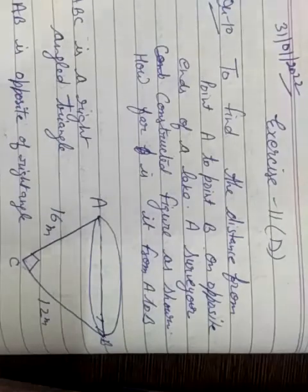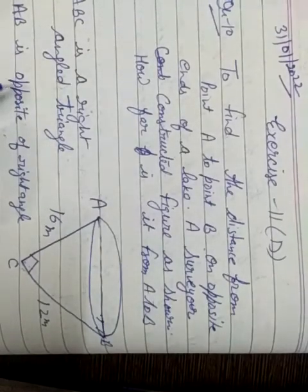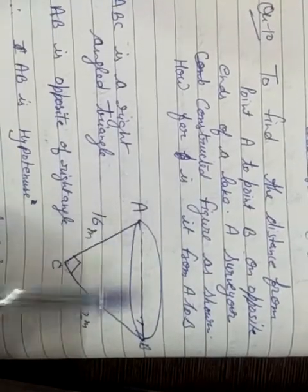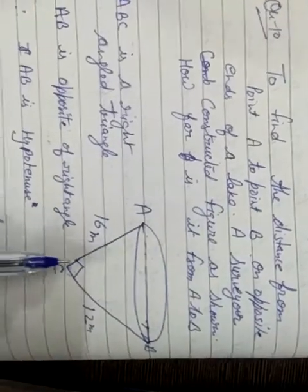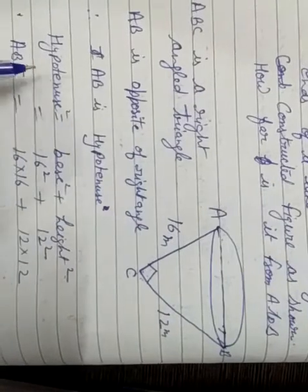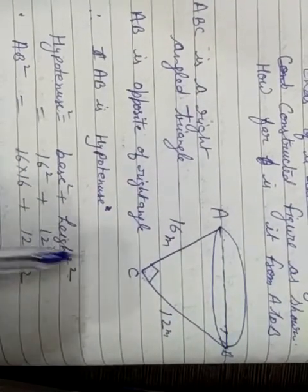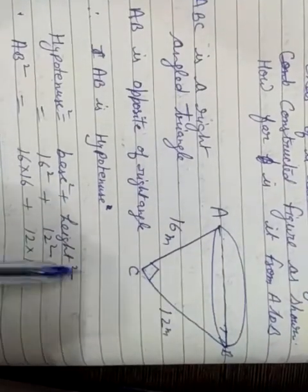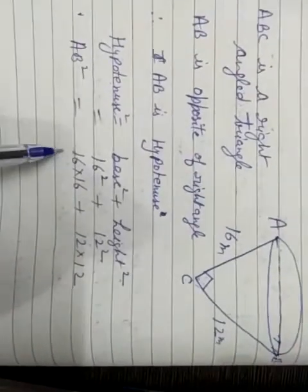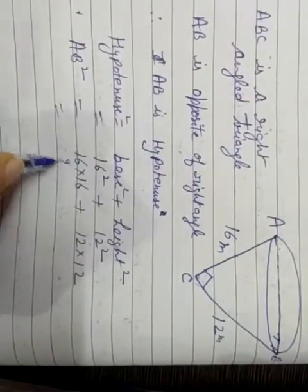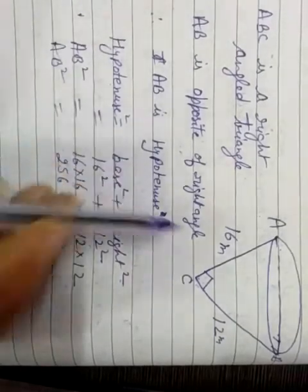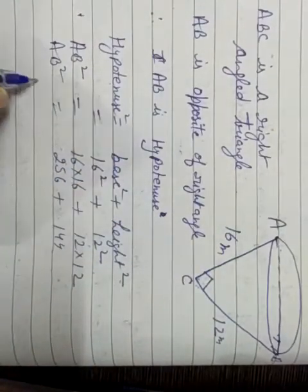ABC is a right-angle triangle. AB is opposite side of right angle, so AB is the hypotenuse. To calculate hypotenuse, we use: hypotenuse square is equal to base square plus height square. Base is 16 meter and height is 12 meter. So, AB square equals 16 square plus 12 square, which is 256 plus 144.